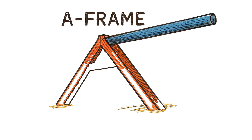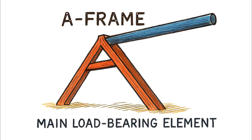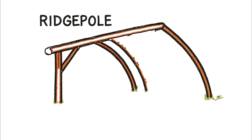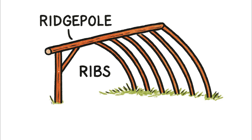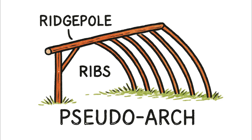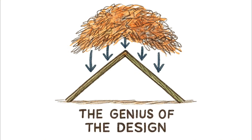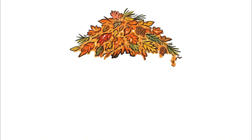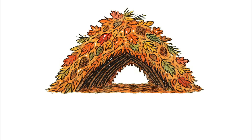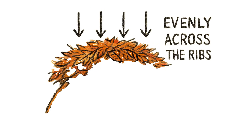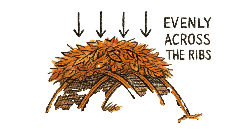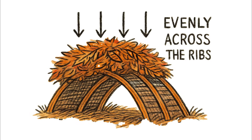From that ridge pole, secondary branches or ribs are angled down to the ground, creating a long vaulted shape — a pseudo-arch that provides interior space. The genius of the design comes from its load application. The massive pile of leaves, pine needles, and forest duff that provides insulation isn't a dangerous weight — it's a perfectly distributed load, pressing down evenly across all the ribs and sharing the burden across the entire frame instead of concentrating it on one weak spot.